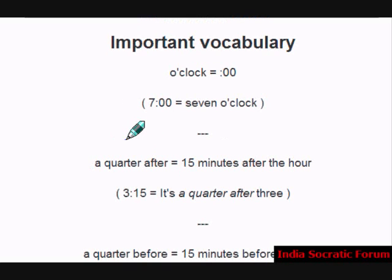Important vocabulary that we have to remember is o'clock. What is o'clock? 6 o'clock is 6:00. 7 o'clock is 7:00. We call it 7 o'clock.